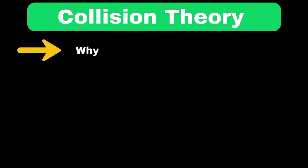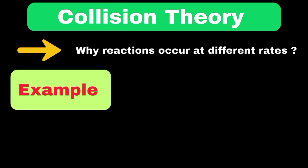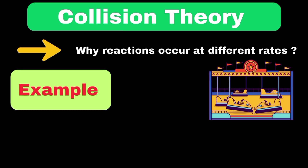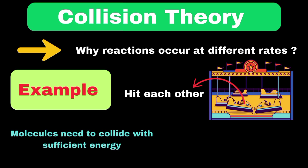Moving to collision theory, this helps explain why reactions occur at different rates. To understand collision theory, let's imagine bumper cars at an amusement park. Just as bumper cars need to hit each other with enough energy and at the right angle to create an interesting collision, molecules need to collide with sufficient energy and proper orientation to react. This explains why increasing temperature and concentration speeds up reactions.